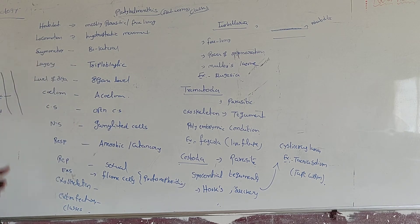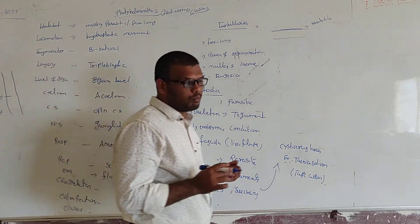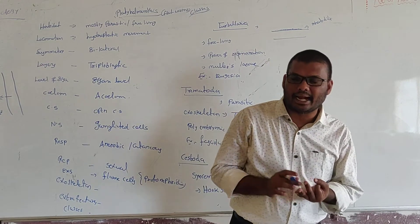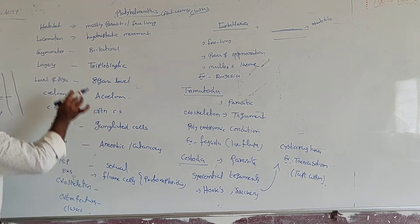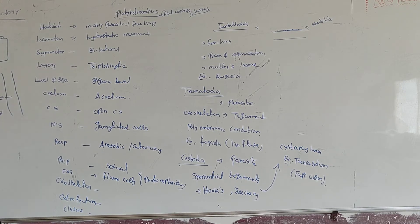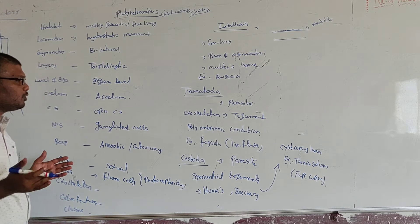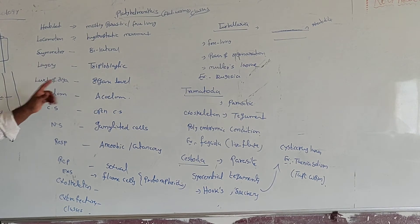Now if we go for the symmetry. The first two phyla — Porifera, Cnidaria, and Ctenophora — show radial symmetry. But bilateral symmetry can be seen in the Platyhelminthes. Through the median sagittal plane, if you cut the body, it can be divided into two equal parts. That type of symmetry is called bilateral symmetry.